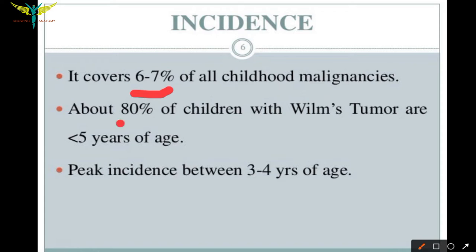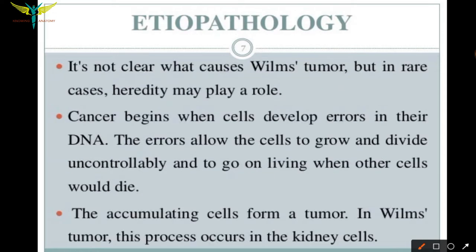About 80 percent of children with this condition are below 5 years of age. The peak incidence of nephroblastoma is at 3 to 4 years of age. The etiology of Wilms' tumor is not entirely clear.